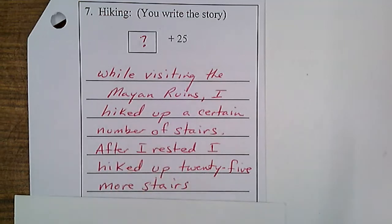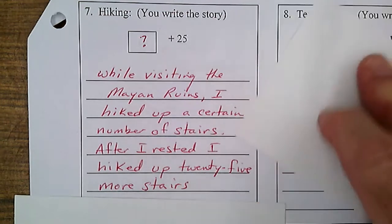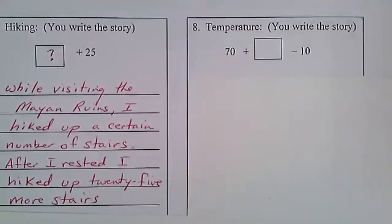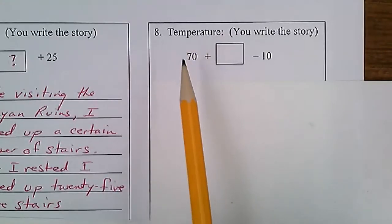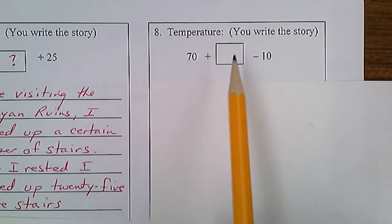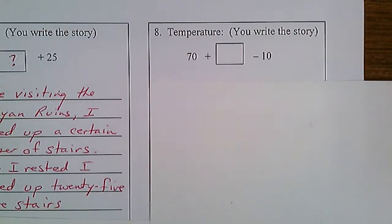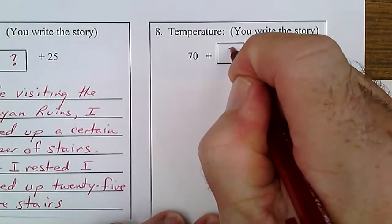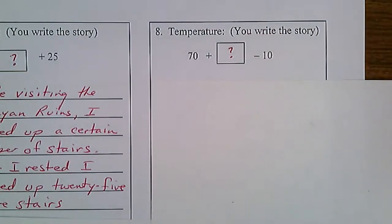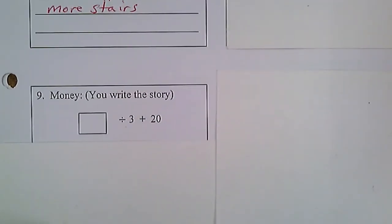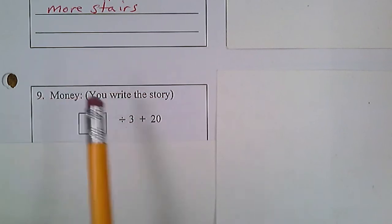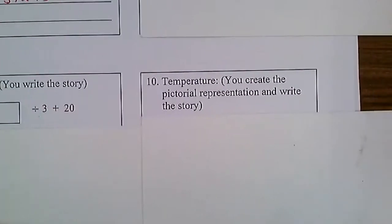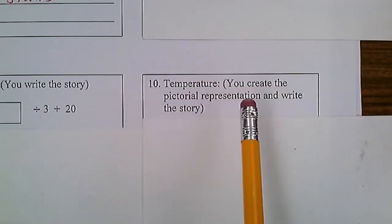Now you're going to have to write the story for number eight, nine, and ten. On number eight, you are going to do a temperature story — you've got the number 70, an unknown amount, and then minus 10. On number nine, you're doing a money story — you've got an unknown amount divided by three plus 20. And on the last one, you have a temperature story where you actually have to create the picture and write the story yourself.